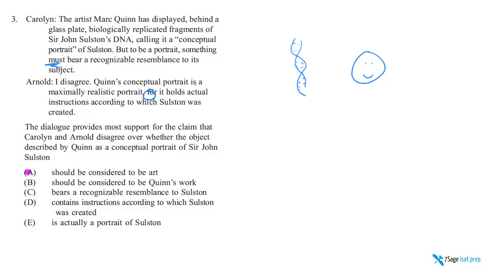So what do they disagree over? Should we consider it art? No — they don't have a discussion about whether it's art. Neither one takes a position on whether it's art. For B, should we consider it Quinn's work? I think they both say yes, so there's no disagreement there. For C, bears a recognizable resemblance to Solstyn — I think they both agree that it doesn't, because no one would seriously argue that a replica of DNA actually looks like a person.